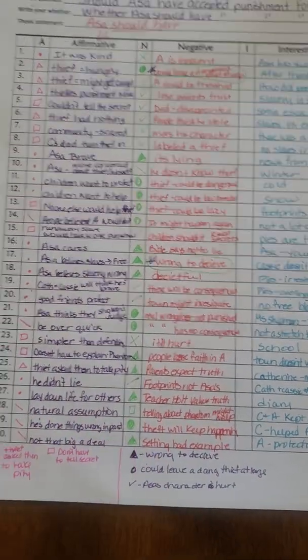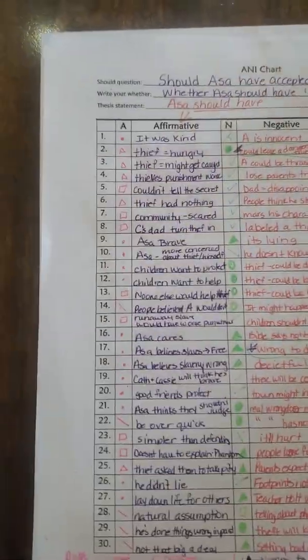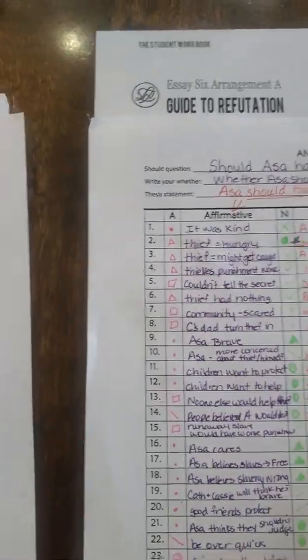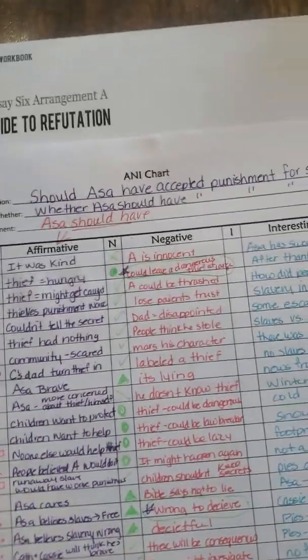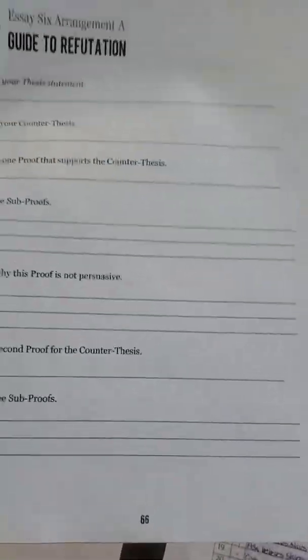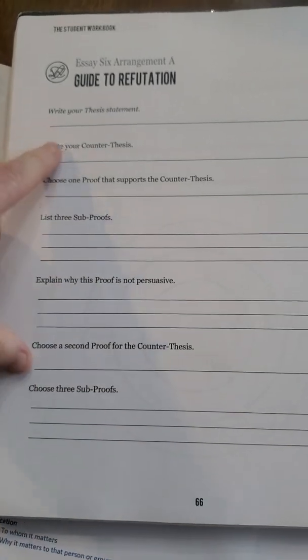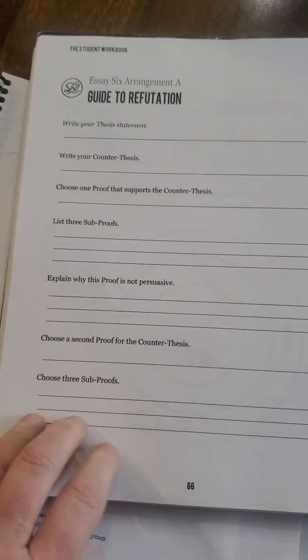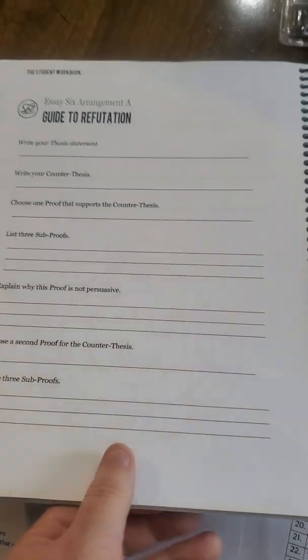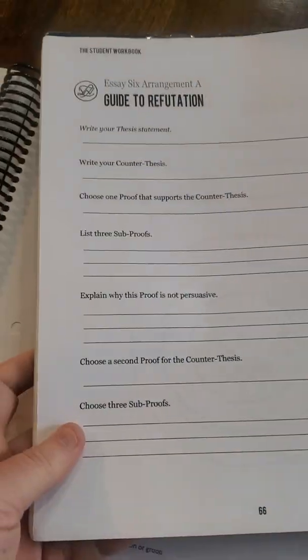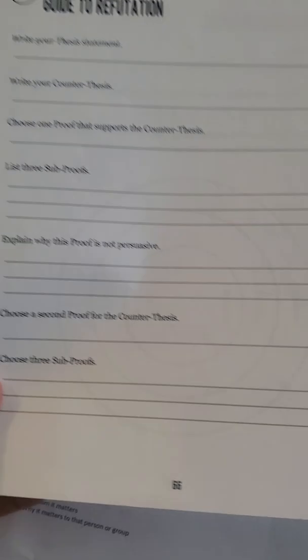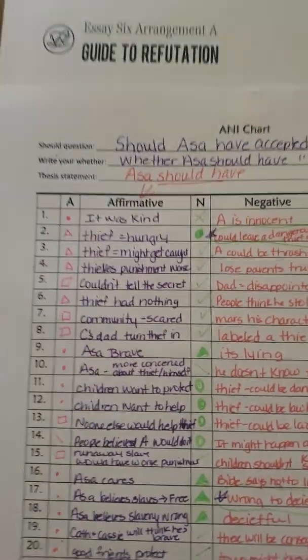Now that I am ready to think through how I'm actually going to write my refutation — in your student's book on pages 66 and 67, they have this guide to reputation. So when you get to this part, have them go through this worksheet, make a copy of it, and have them really walk through this, because it's going to help them sort through their ideas. I made a copy, so I'm going to move my A&I chart out of the way and cover up my own paper.